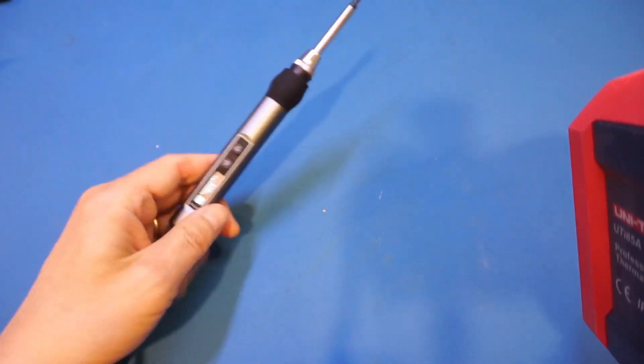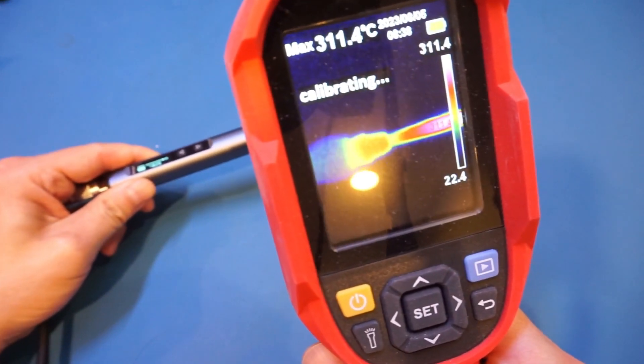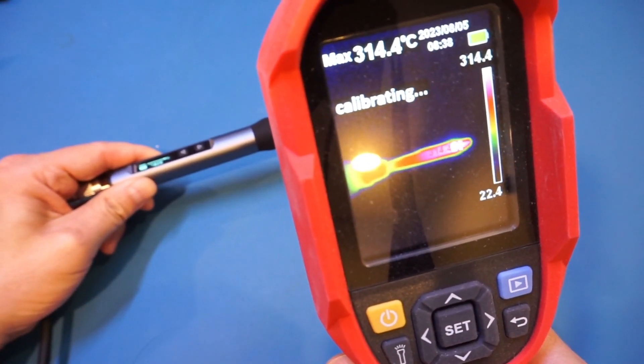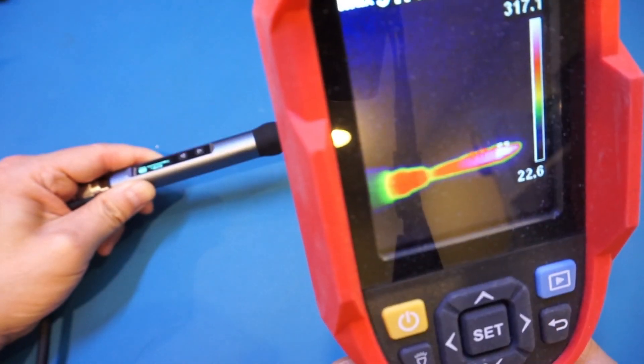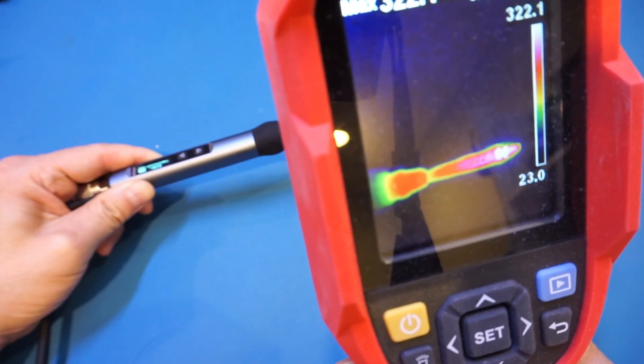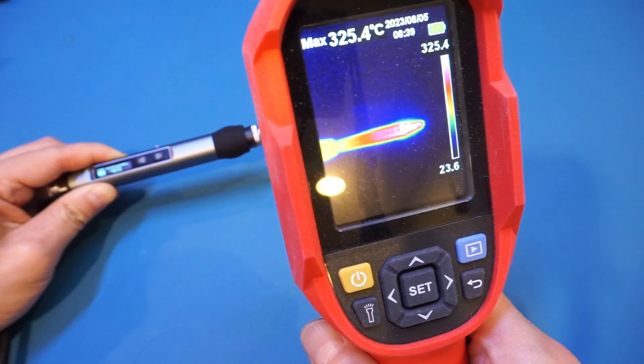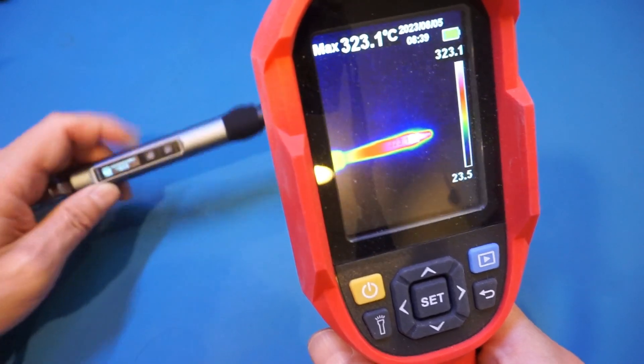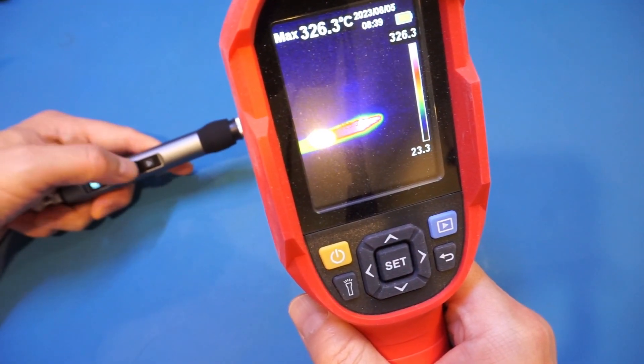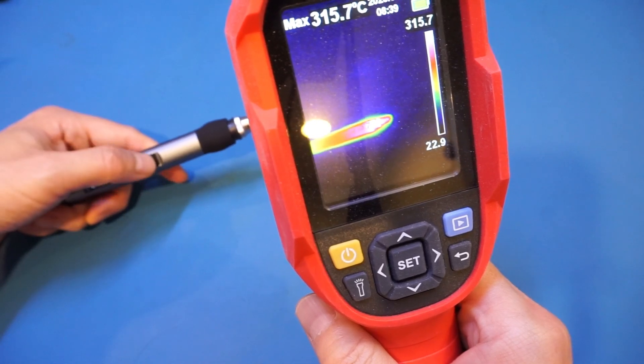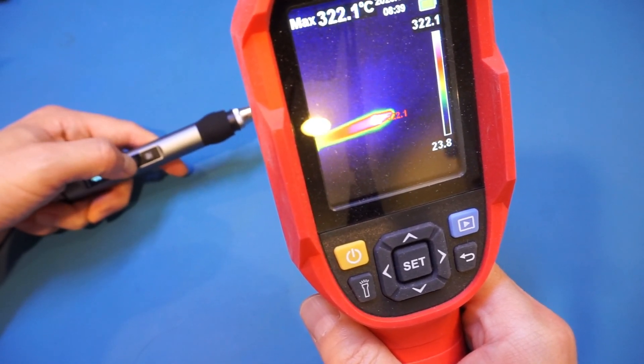I cheated a little bit and I just did an emissivity adjustment on this thermal camera so I can get a reading close to what is shown on the soldering iron. As you can see, it's roughly reading about 312, 313 degrees. What I'm trying to show you is the stability of the temperature and the relative temperature changes. You can see that the temperature is quite stable. Let me just adjust the iron temperature and you can see on the thermal imager here - let's increase to 360.